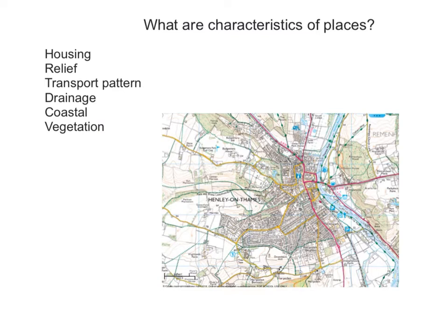So that was function. Let's now look at characteristics of places. What are characteristics of places? Well there can be all sorts of things in geography including housing, the relief of the land, transport pattern, the drainage of an area, whether it's coastal, and the type of vegetation there.